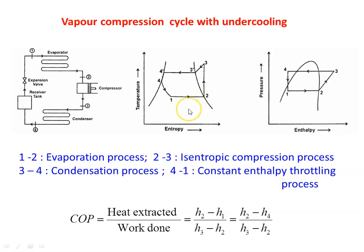We discussed five different vapor compression cycles. In all five cycles, the COP equation, power input to the compressor, heat extracted in the condenser, and refrigeration effect equations are the same. The difference lies in the location of the enthalpy points H1, H2, H3, H4 and how their values are calculated based on the condition of vapor before or after the compressor or condenser. With this, we complete the topic and will discuss vapor absorption refrigeration in the next lecture.